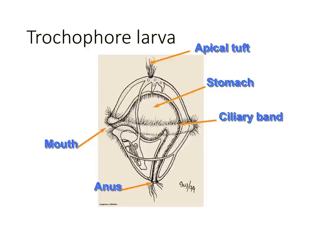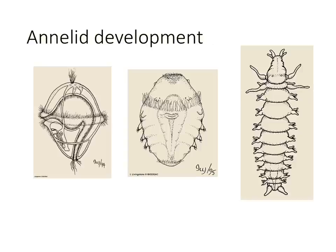Here's what their trochophore larvae look like. Just like in the mollusks, annelids also have trochophore larvae, so they have indirect development. This shows how they develop from the trochophore larvae into their adult form.